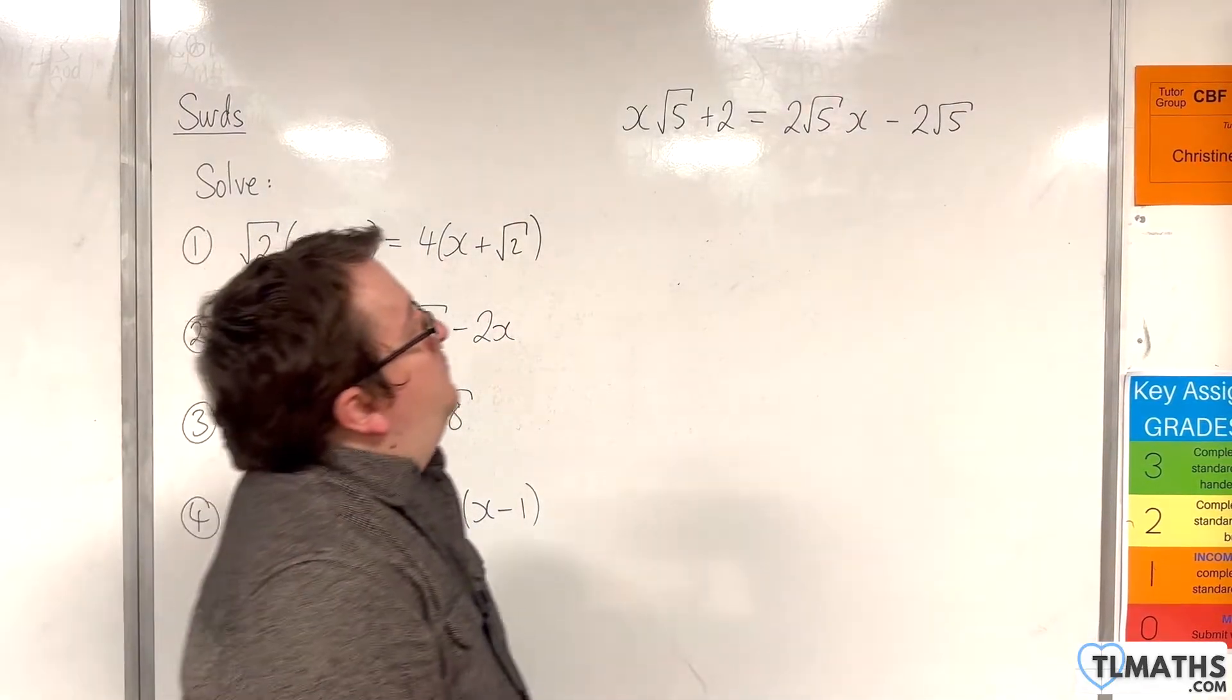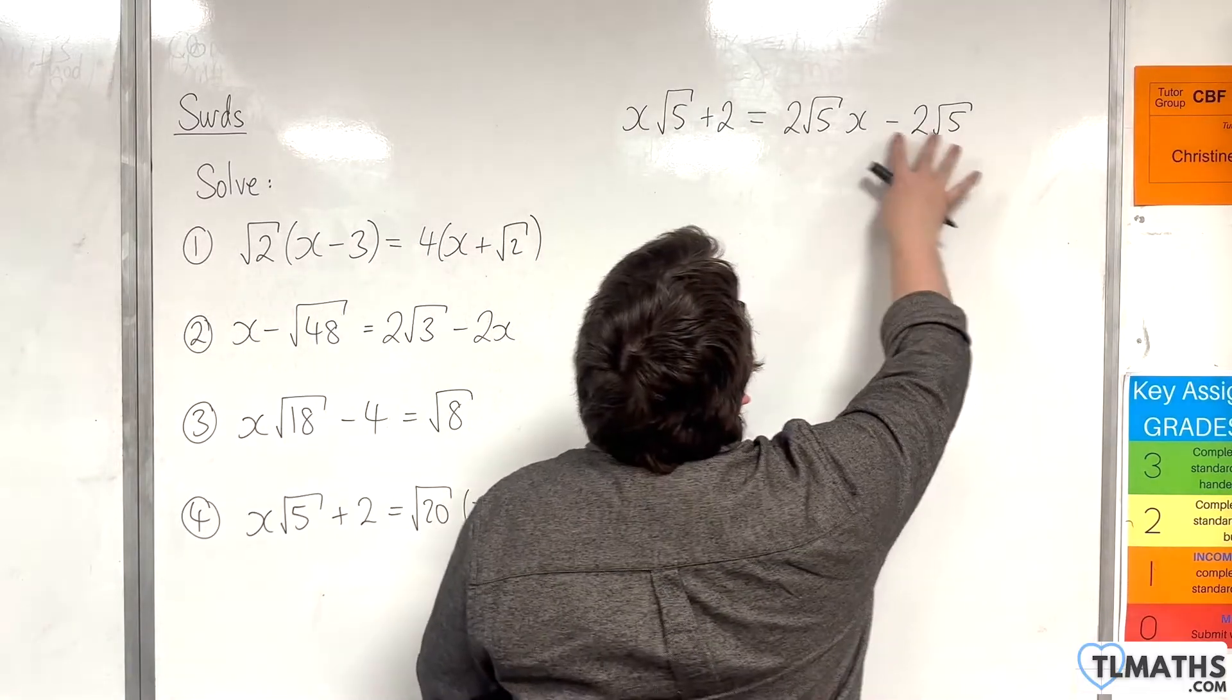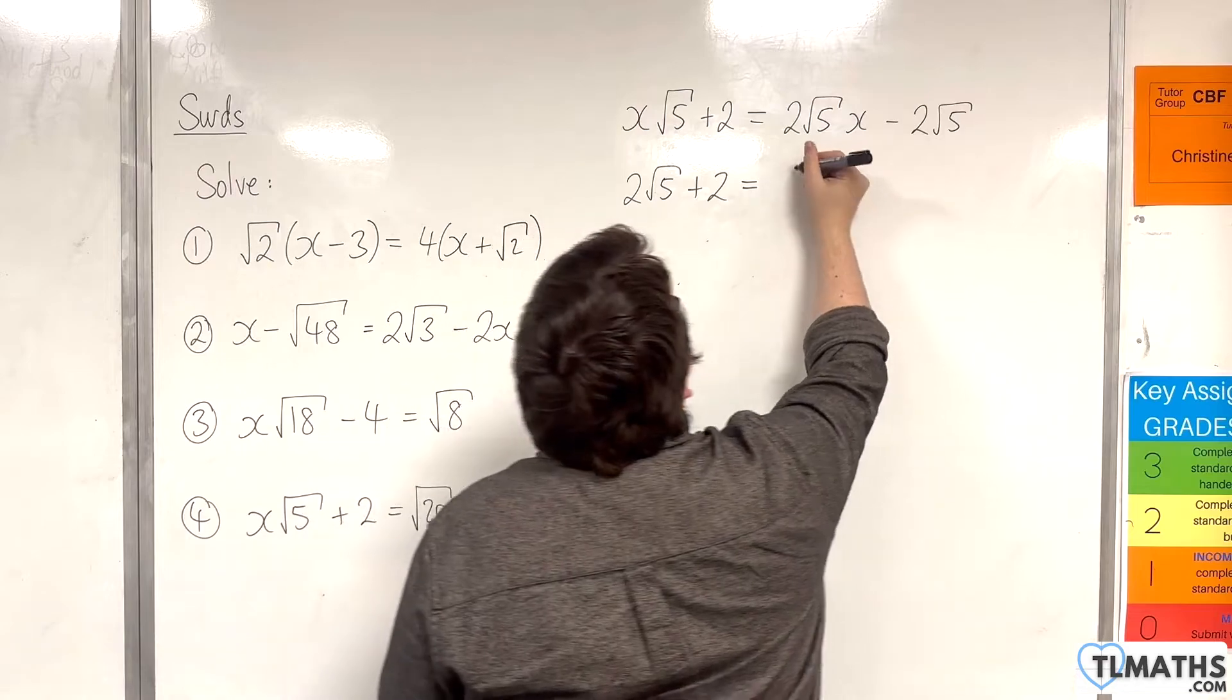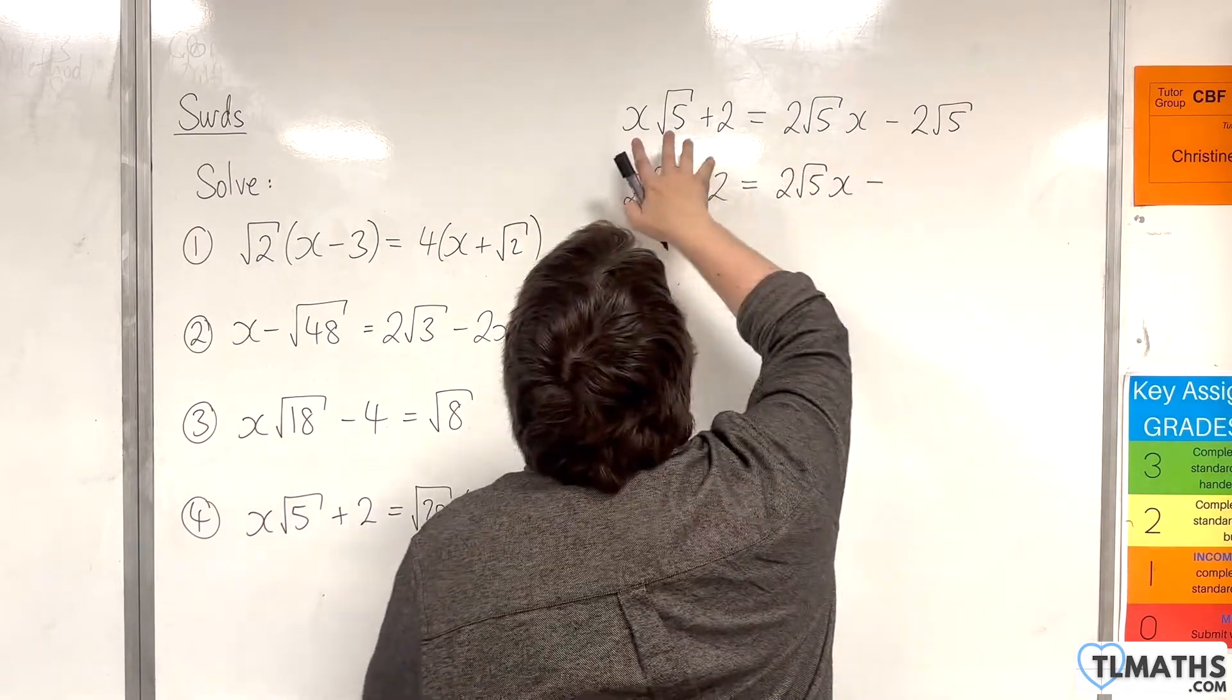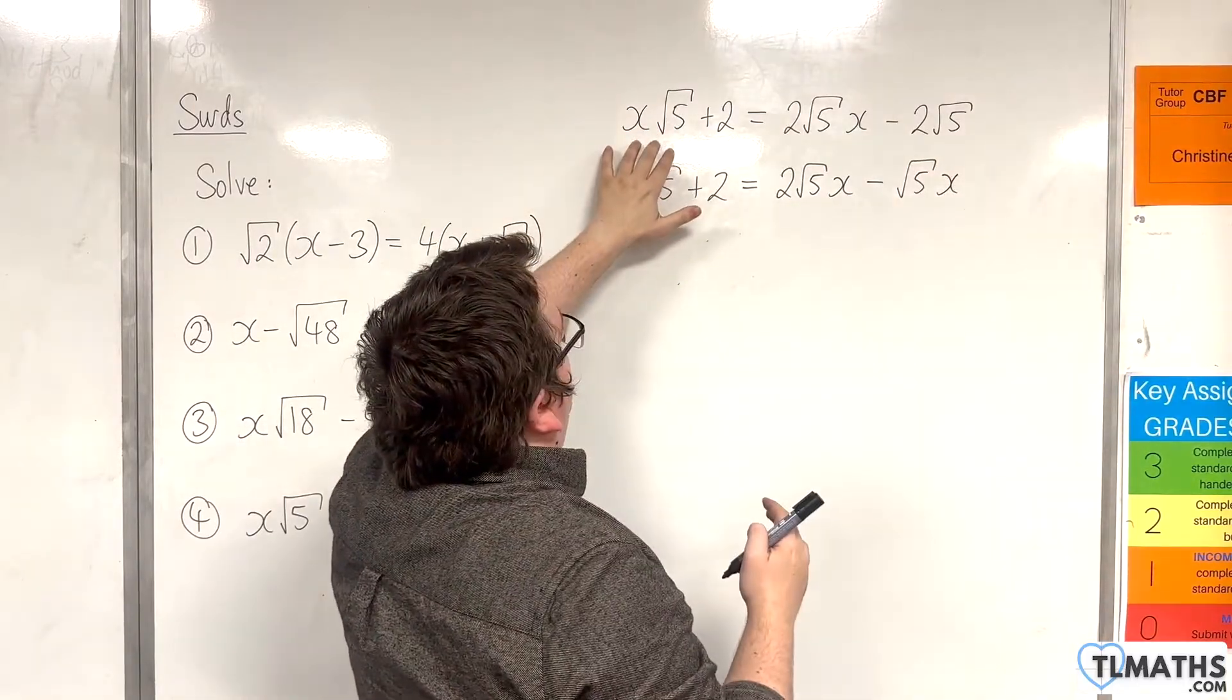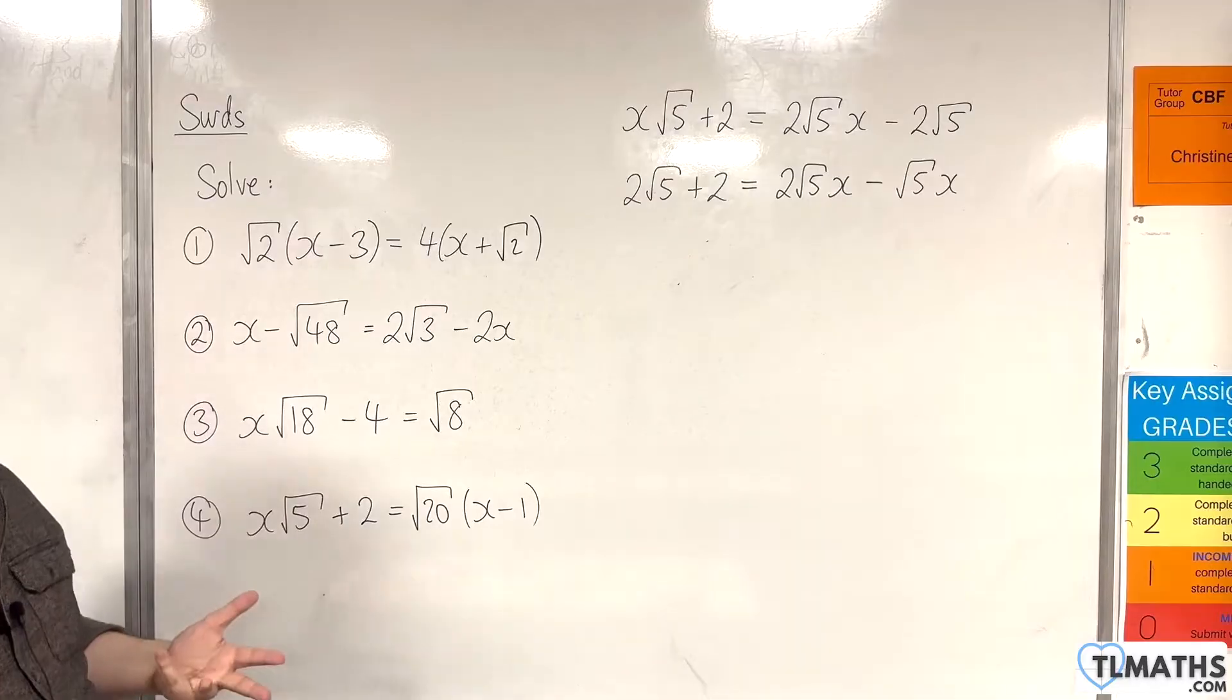So then, I want to get all the x's on one side and everything else on the other. Now, to avoid minuses, I'm going to add 2 root 5 to both sides. And I'm going to subtract x root 5 from both sides. So I've got 2 root 5x. And I'm just going to rearrange this so it makes sense, because we've got the root 5 times x. Because here I've got the root 5 to the right of the x, and here I've got the 2 root 5 to the left of the x. And that can cause some issues if you're not careful.